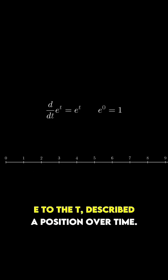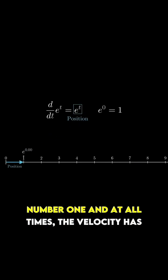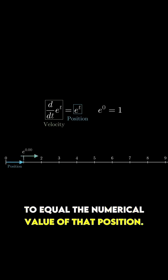For example, let's say e to the t described a position over time. What this means is that it starts at the number one, and at all times, the velocity has to equal the numerical value of that position.